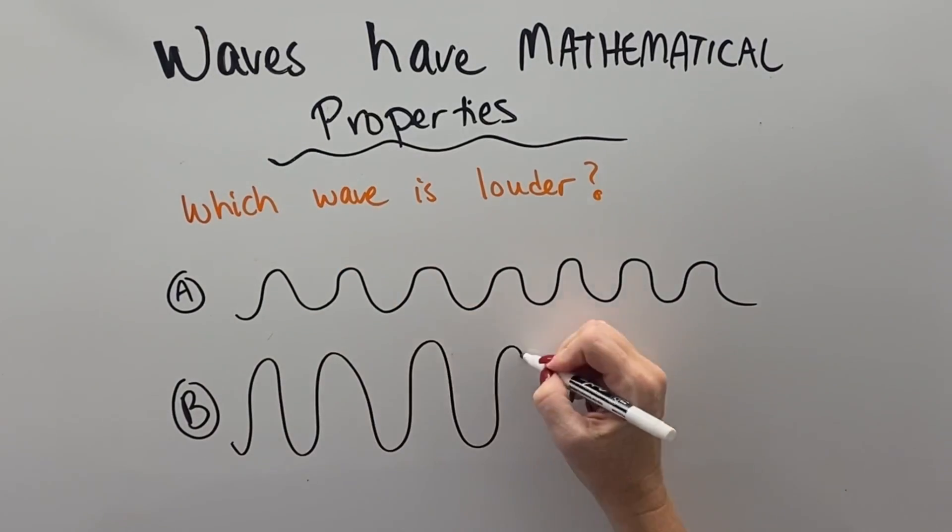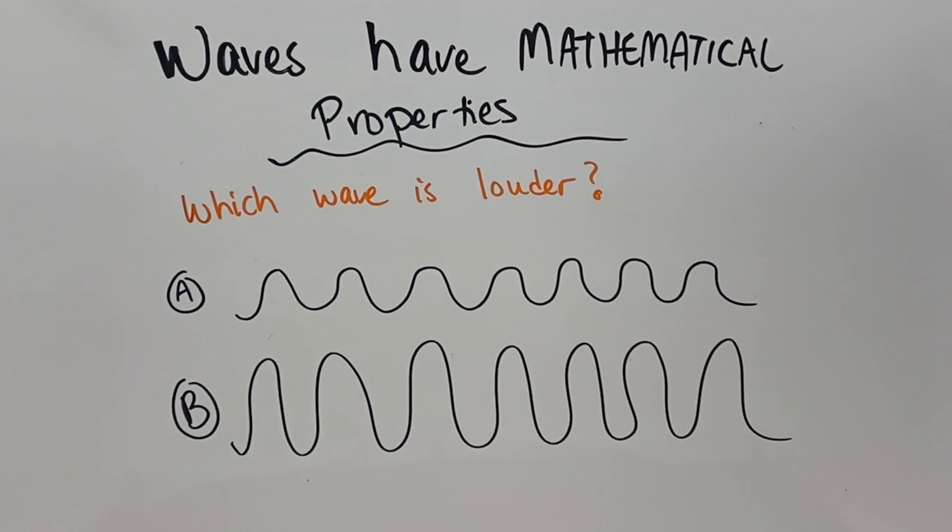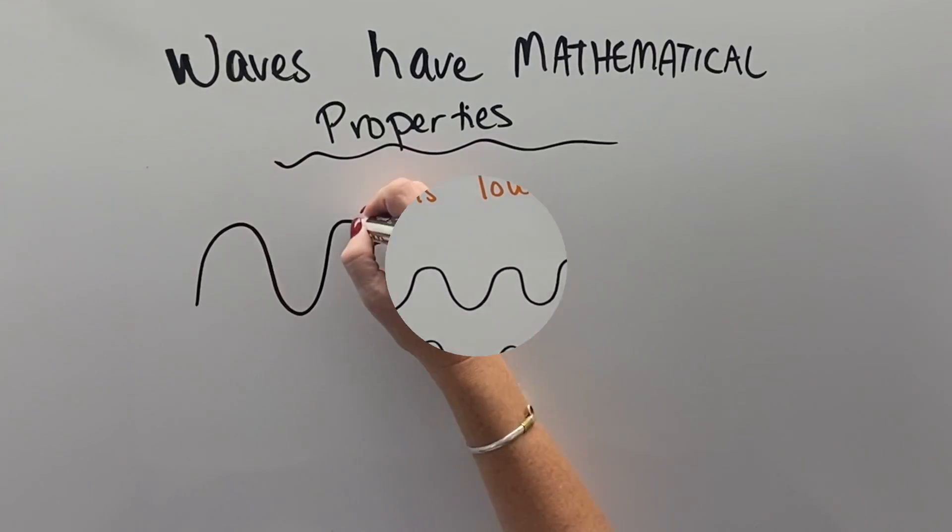Which wave would you say is louder? Did you say wave B? Nice job! Of course it's louder, right? Because it has a higher amplitude and taller waves make louder sounds.